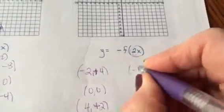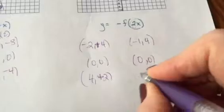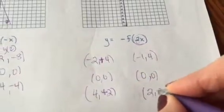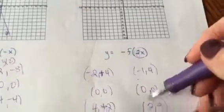Half of that is negative 1. Half of 0 is still 0, and half of 4 is 2. So you can say I took all my x values, halved them or divided by 2.